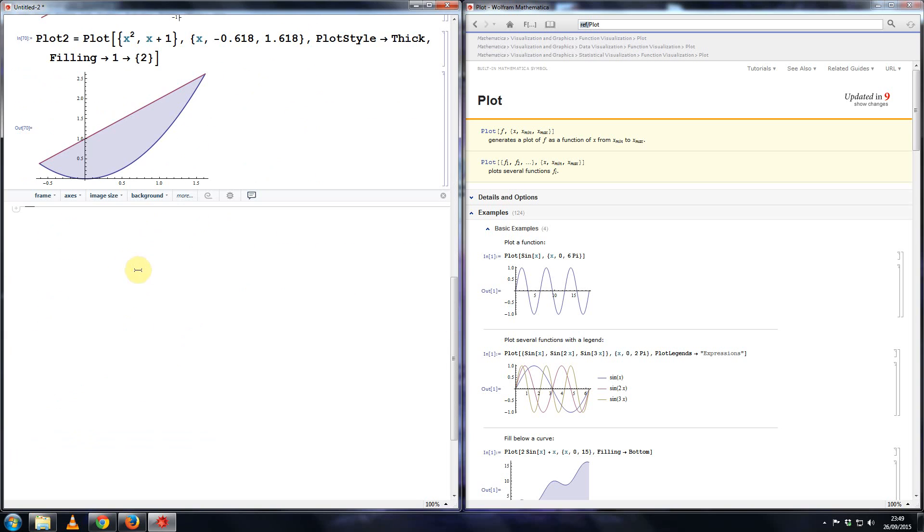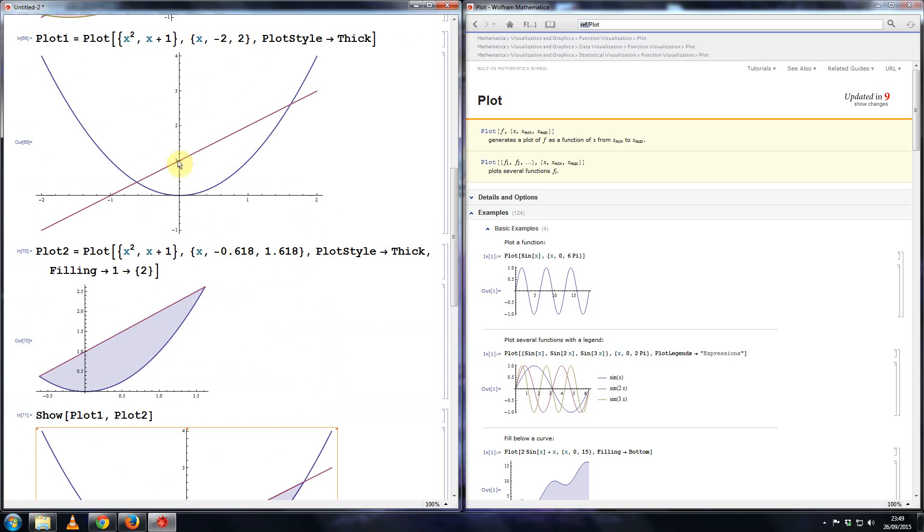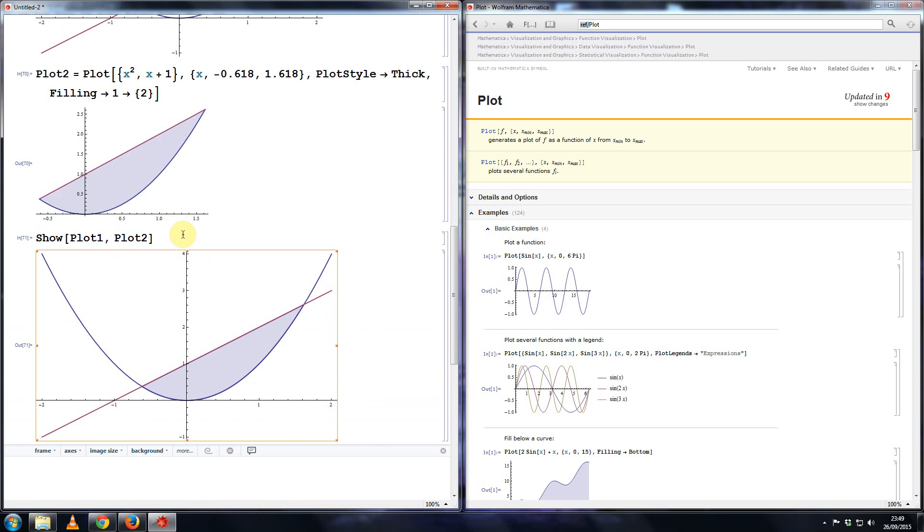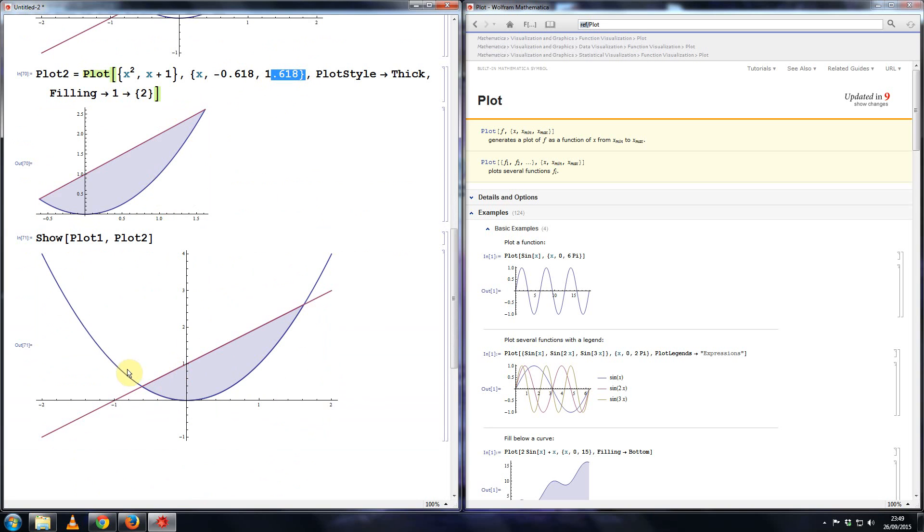I'll call this plot two. And to combine these two together, I could use the show command. Increase that font size. So show plot one comma plot two. And there you have it. So all it's doing is just showing these two plots on one axis or just combining those two. So since the second one is only plotted between these two values, the shading only appears for that region there.